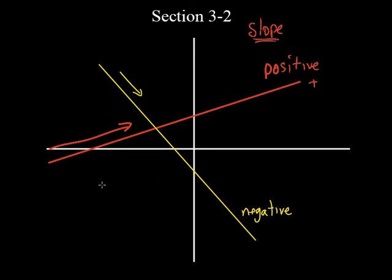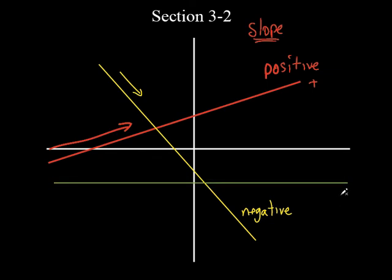What if you had a line that wasn't going up and it wasn't going down — it was just going straight across horizontally? This is a horizontal line. It's not no slope — it does have a slope. It's a zero slope. Now, when I think of slopes, I don't know how many of you guys go skiing, like snow skiing. Anybody gone skiing or snowboarding or anything like that?